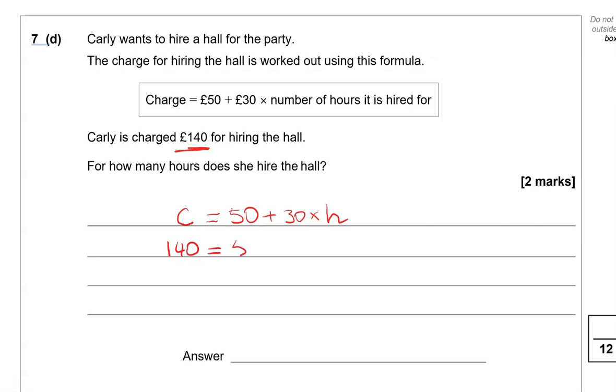So that is equal to 50 plus 30 times h. We don't know the number of hours and that's what we're going to need to work out. You will know through BIDMAS that you need to multiply first before you add. So practically that number of hours will need to be multiplied by 30 first and then 50 to be added to give us 140.